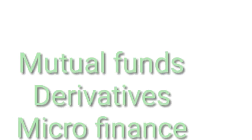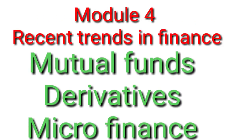Module Number 4 covers recent trends in finance and will be asked in Question Number 5. Mutual funds is a very important question — do not keep it in options. Topics include: importance of mutual funds, types of mutual funds, and factors responsible for the growth of mutual funds. Derivative markets, systematic investment plans (SIP), and microfinance for needy groups, farmers, and small finance are also very important expected questions.